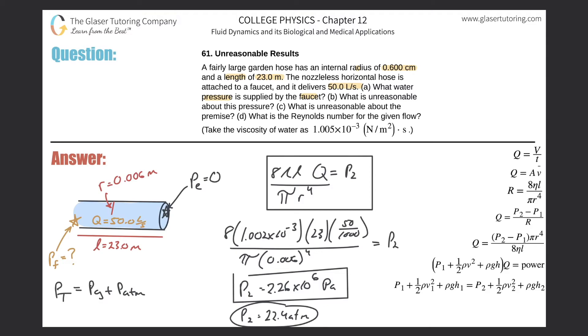I mean, that might make this a little more real. This is an extreme amount of pressure, definitely much more than what will be supplied by a typical spigot. And then, what is unreasonable about the premise? What are the values that went into the premise here? Yeah, 50 liters per second.